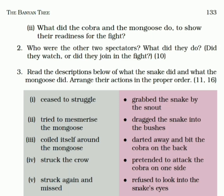Yeh jo six points aapko diye hai, yeh aage pichhe diye hai. Aur aapne kya karna hai? Jo kaam pehle hua hai, usko pehle likhna hai. Phir dusri term number pe jo hua, woh likhna hai. Phir aise karke aapne isko pura order mein likhna hai.